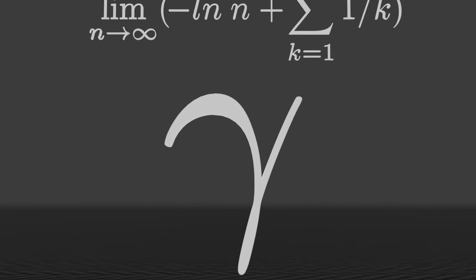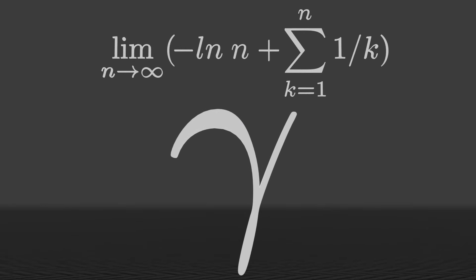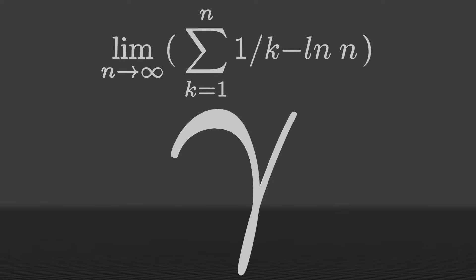What does this constant mean? Here you can see the equation defining it. We can start by flipping the log — because what monster puts the negative on the left — and separating it into two parts: first, the harmonic series, and second, the natural log.